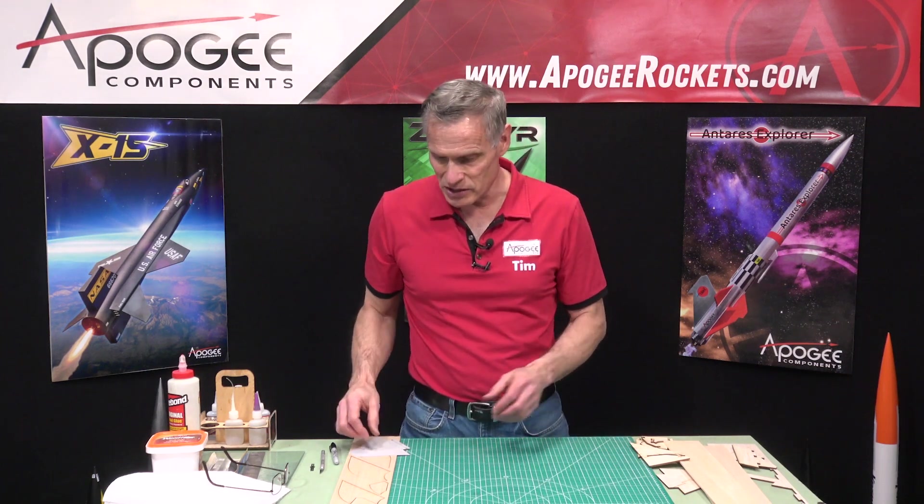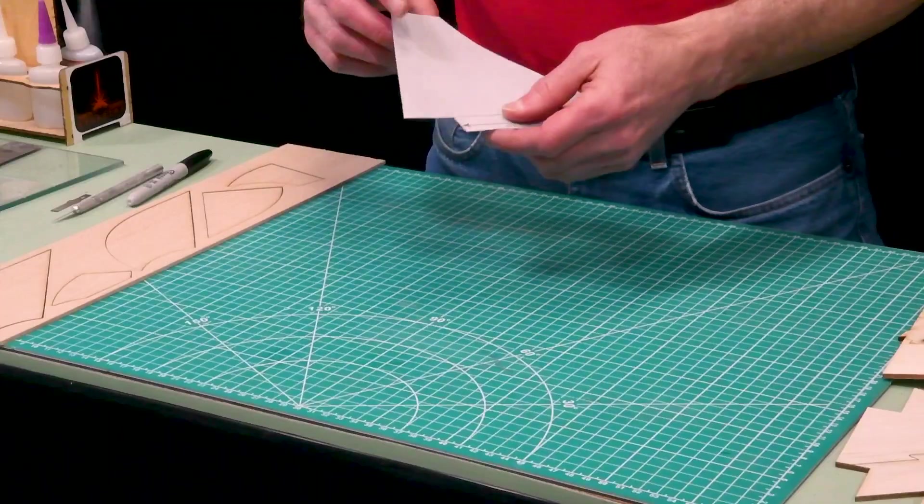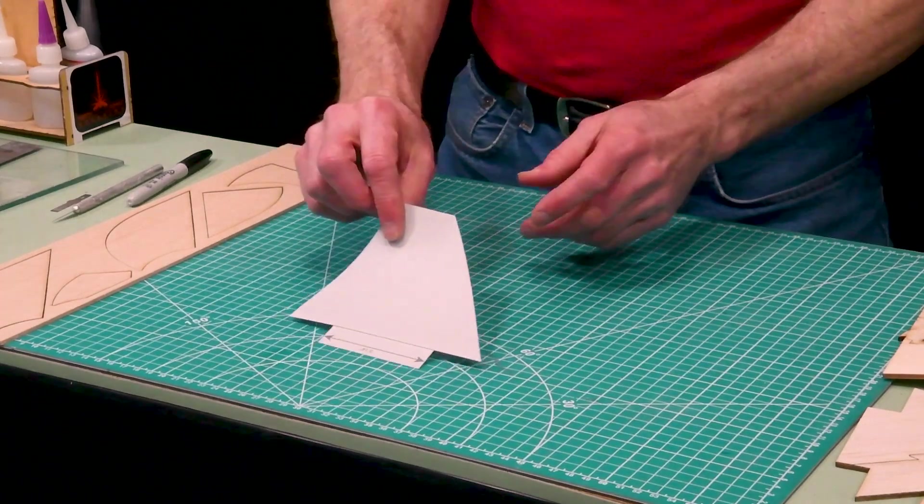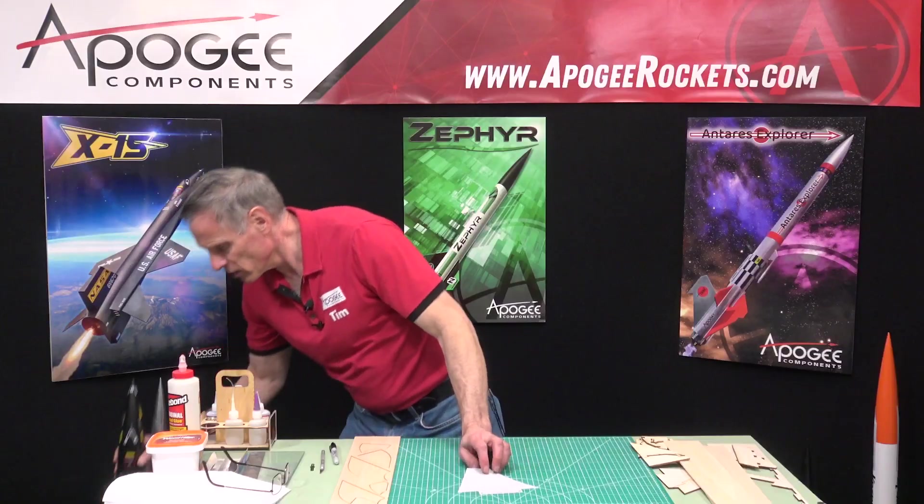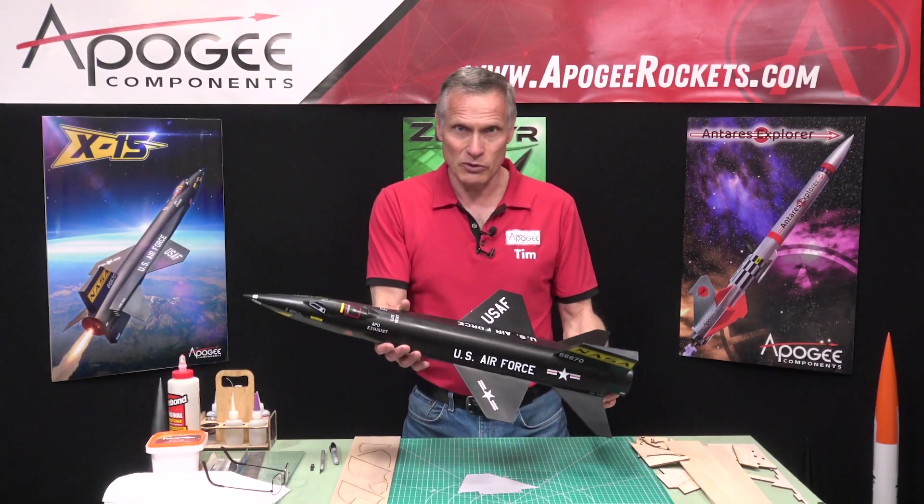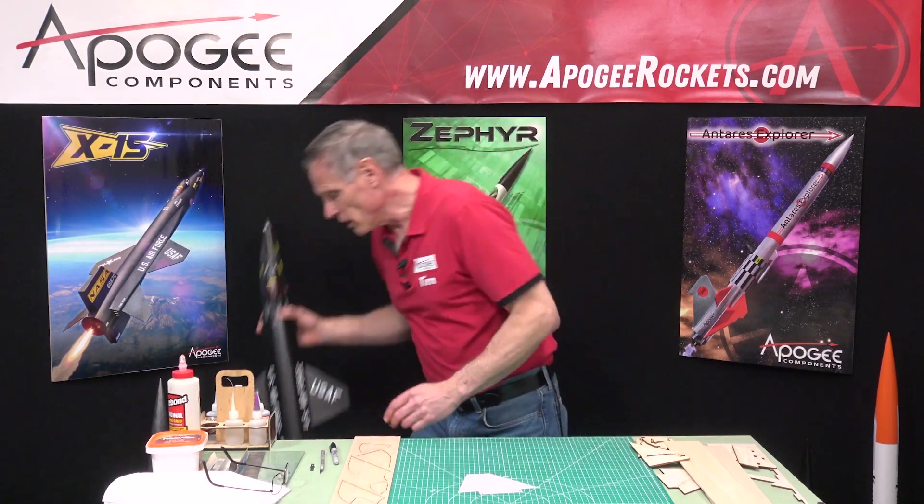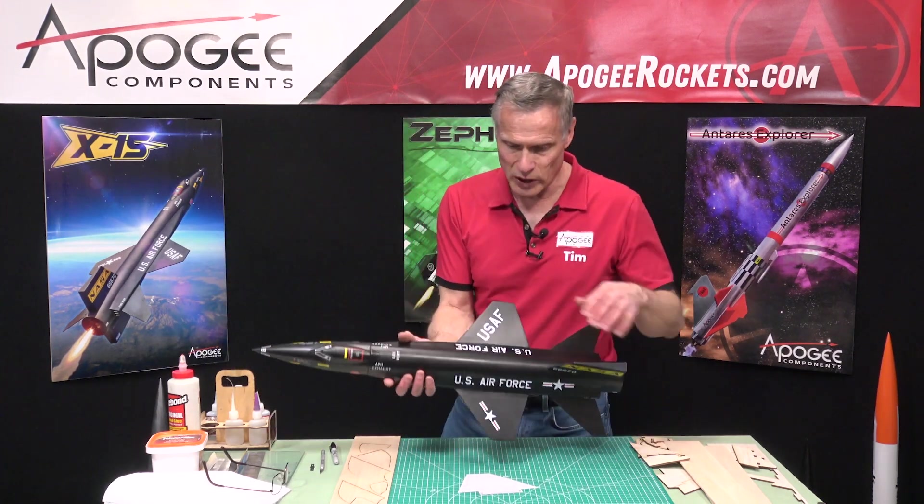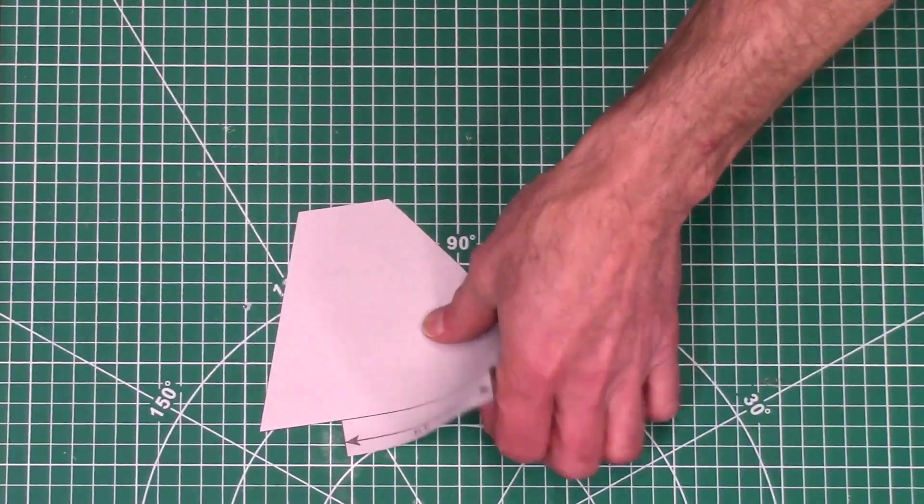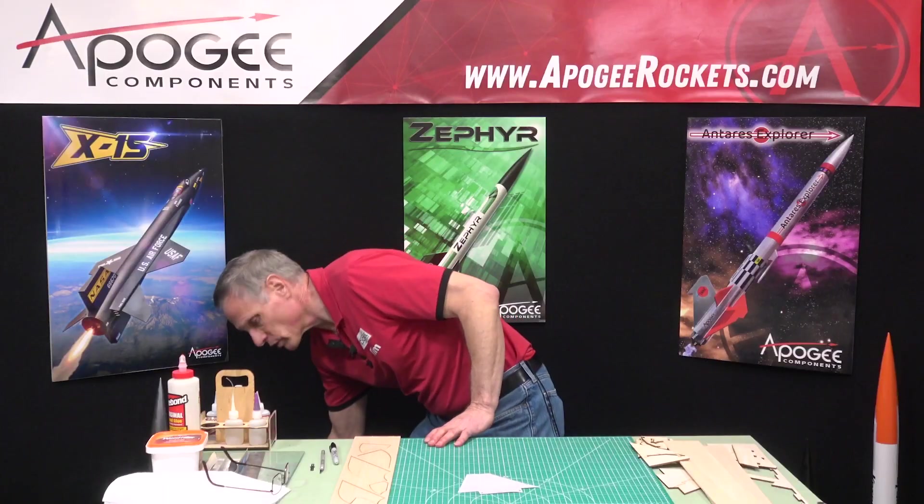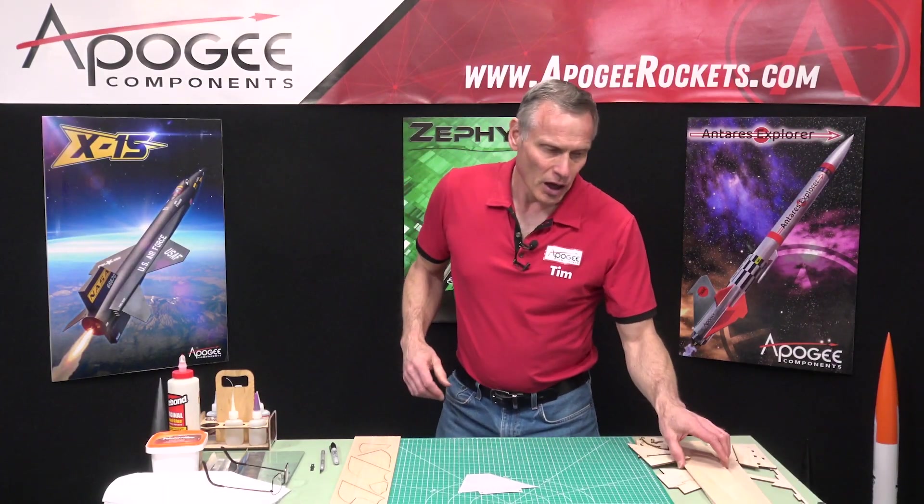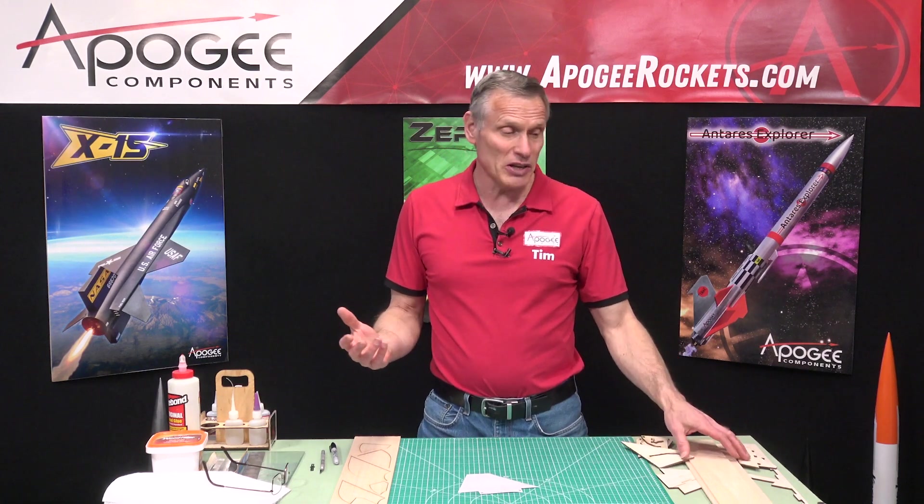The first reason is because of size. Some fins like this one here, and this is from the X-15 rocket that we sell at Apogee, have a huge wing. I got a template here showing what that looks like.